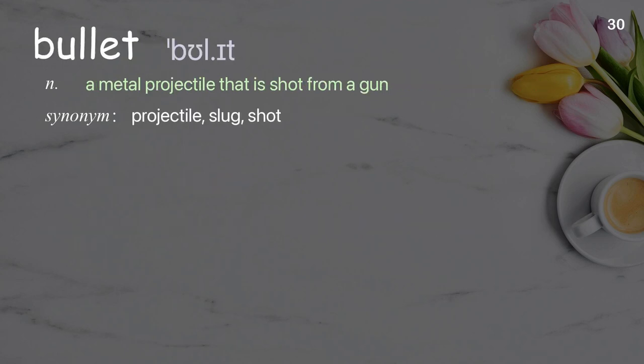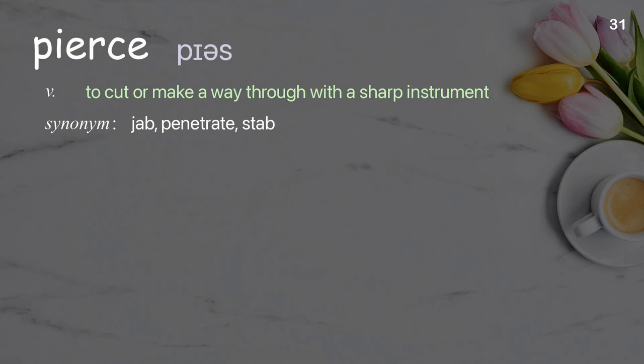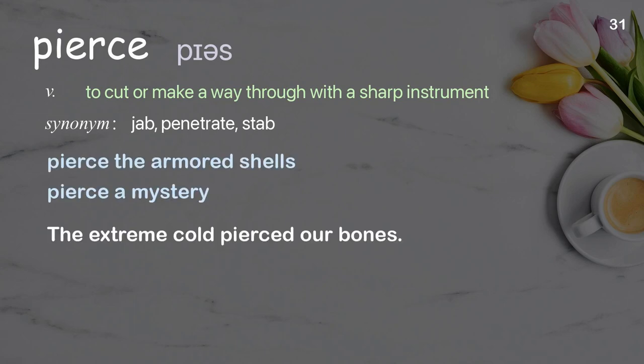Bullet. A metal projectile that is shot from a gun. Examples: bullet wound, bullet train. The stray bullet went through the window and hit the wall. Pierce. To cut or make a way through with a sharp instrument. Examples: pierce the armored shells, pierce a mystery. The extreme cold pierced our bones.